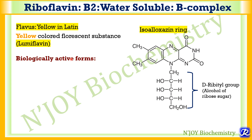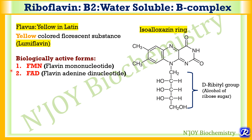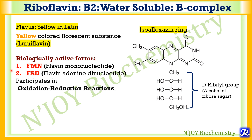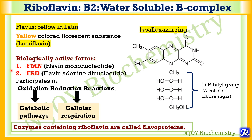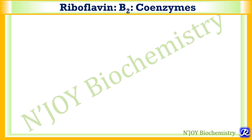There are two biologically active forms of riboflavin: first is FMN, flavin mononucleotide, and second is FAD, flavin adenine dinucleotide. These biologically active forms participate in oxidation-reduction reactions important in various catabolic pathways as well as cellular respiration. The enzymes containing riboflavin are called flavoproteins. Riboflavin is converted to its active coenzyme forms FMN and FAD with the help of the enzyme flavokinase and ATP.